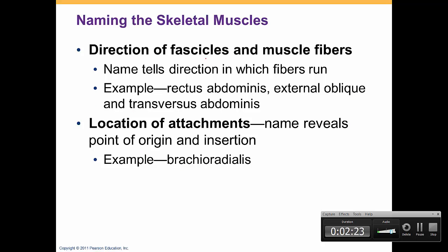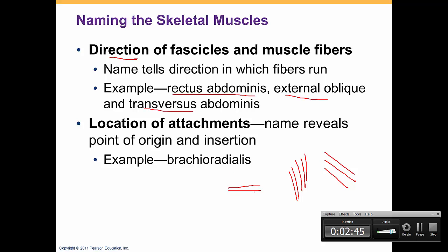We can also name muscles based on the direction of their fibers. For example, rectus abdominis means the fibers go vertically, versus the oblique muscle where fibers run obliquely, and the transversus abdominis where fibers are transverse. We can also name muscles based on their attachment — for example, brachioradialis originates on the brachium (the humerus) and inserts on the radius bone in the forearm.